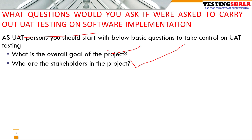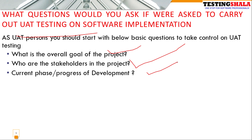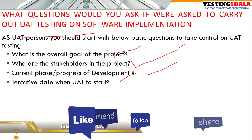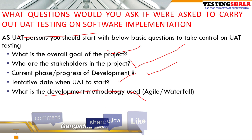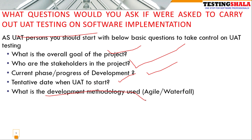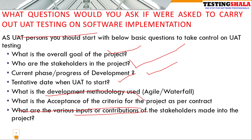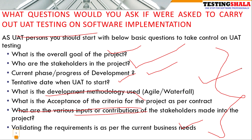The second question is: who are the various stakeholders involved in this project? You should have clarity on who the stakeholders are. Third: what phase or stage is the development work at? Fourth: what is the tentative date stakeholders are looking to perform UAT? You should also check what development methodologies are being used — agile, waterfall, or another model. Seventh: what are the various inputs or contributions from stakeholders that you can include in your UAT testing plan or strategy?